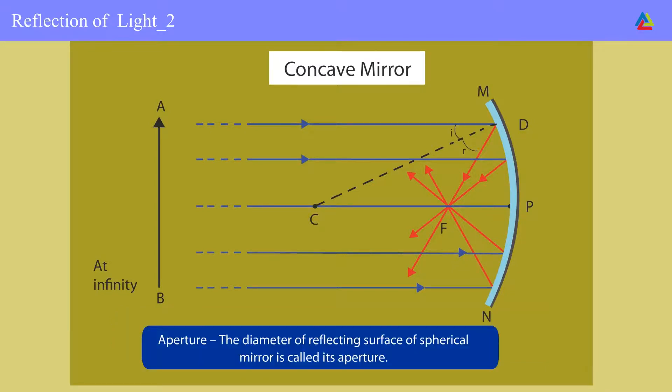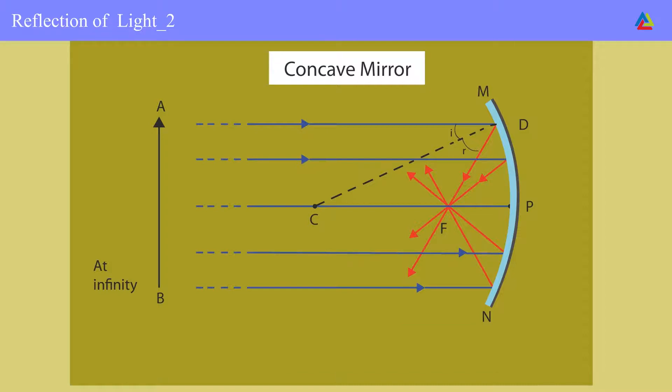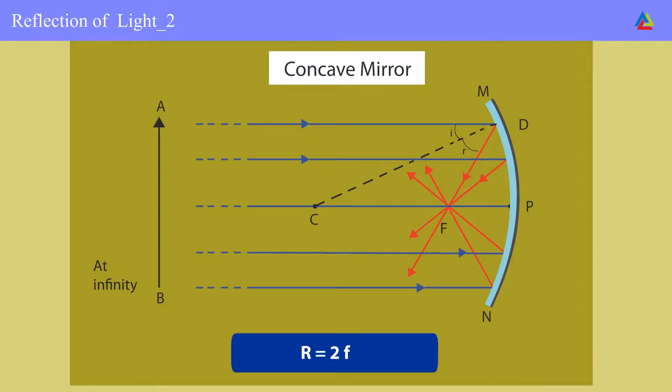The aperture is the diameter of the reflecting surface of a spherical mirror. For spherical mirrors of small aperture, the radius of curvature is equal to twice the focal length. This means the principal focus of a spherical mirror lies midway between the pole and the center of curvature.